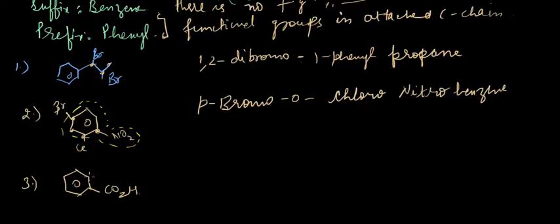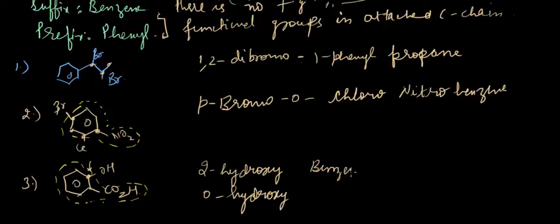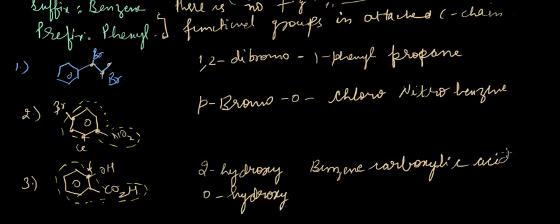Now for a compound with an OH group: this is again at the ortho position, and the base name of this compound is benzene carboxylic acid. So the name of the overall compound would be 2-hydroxy or ortho-hydroxy benzene carboxylic acid — both are acceptable.